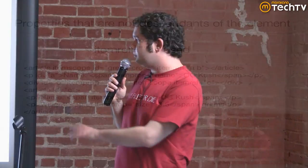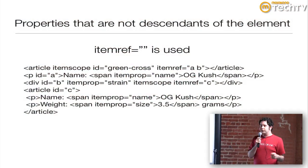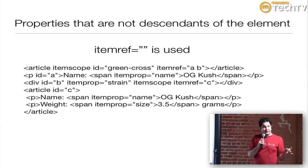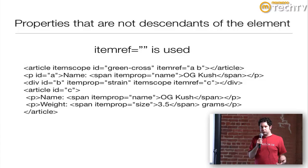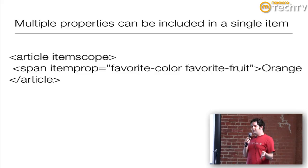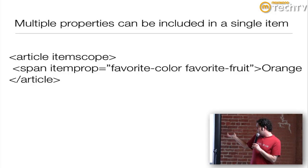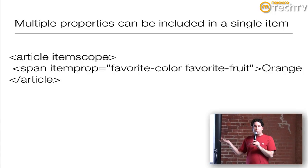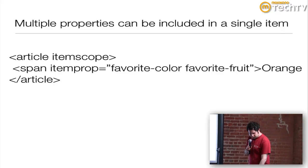There are also properties that are not descendants of the element. There's a way to mark up with microdata that things are not related as well. The itemref attribute is used in that case — you can basically say, 'hey, this is not related to this,' even though it's in the same scope. Multiple properties can also be included in a single item. You can include 'favorite color' and 'favorite fruit' in the same itemprop, and that value would be 'orange,' for example.